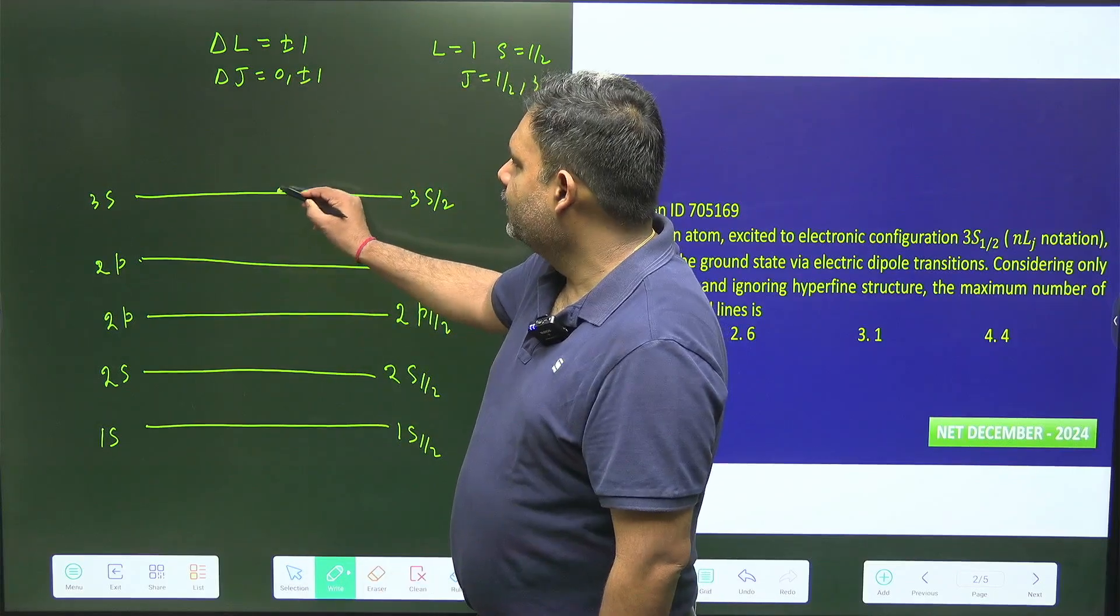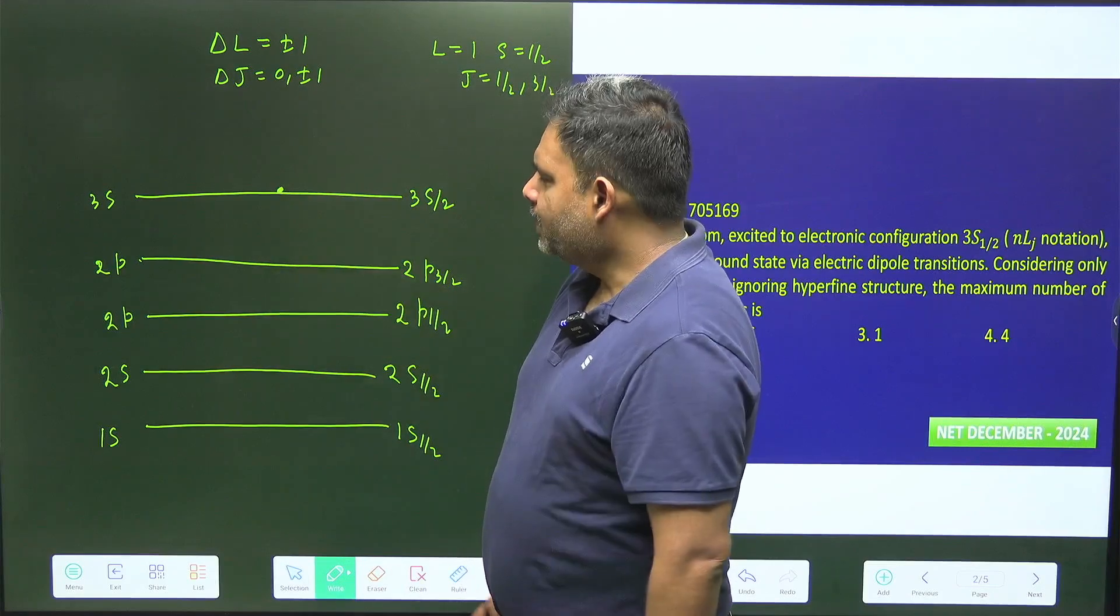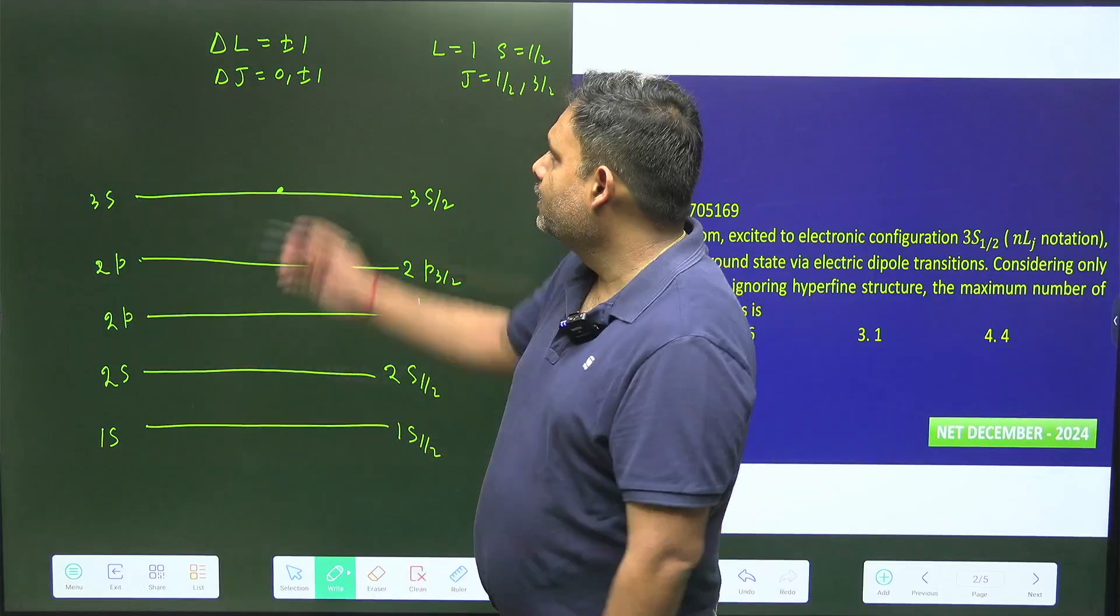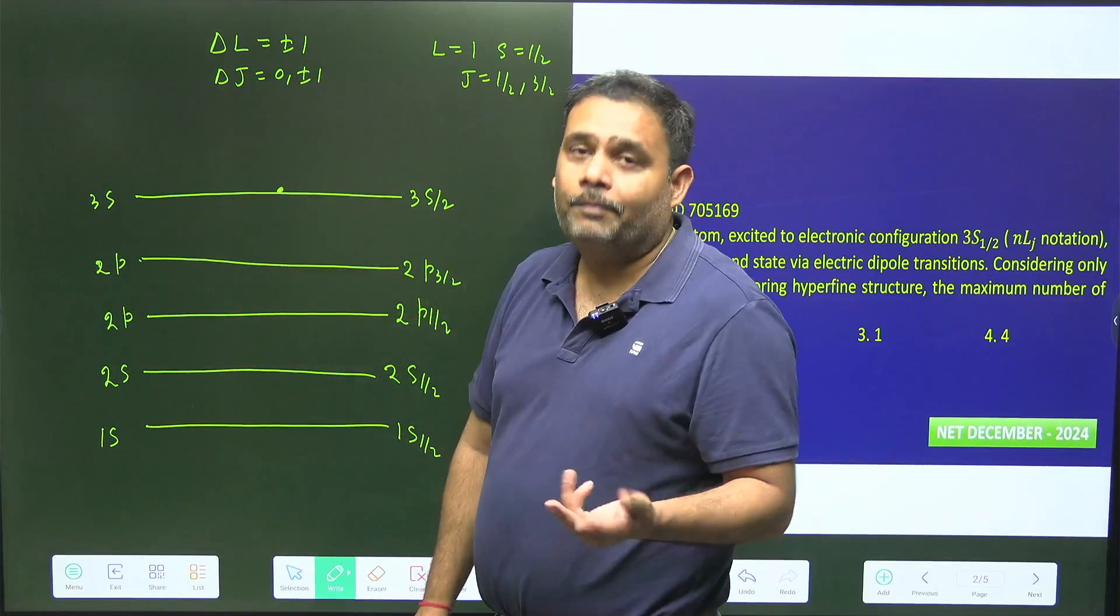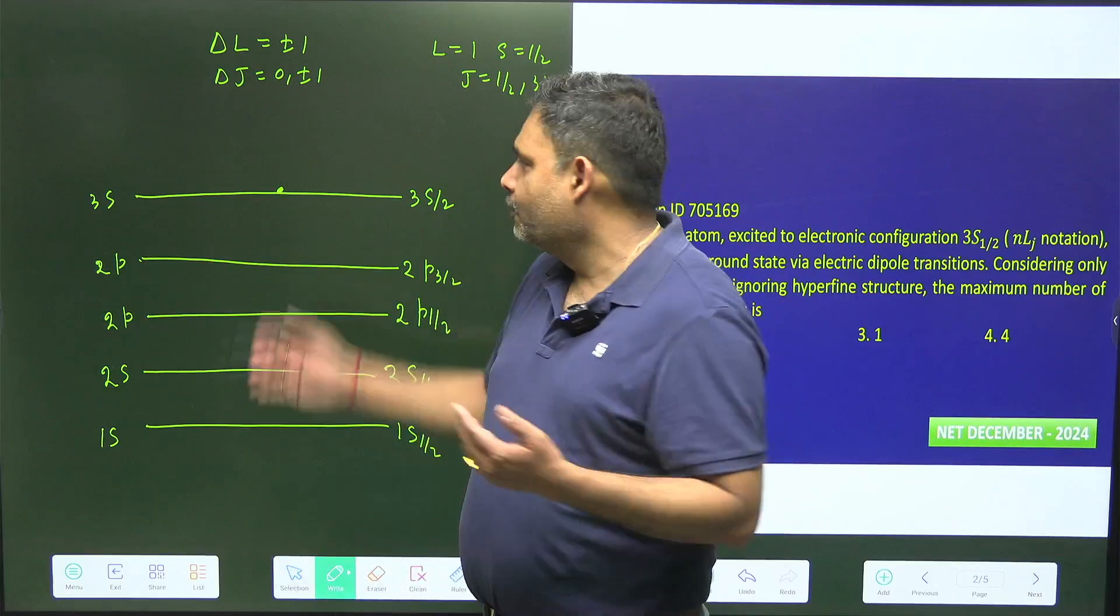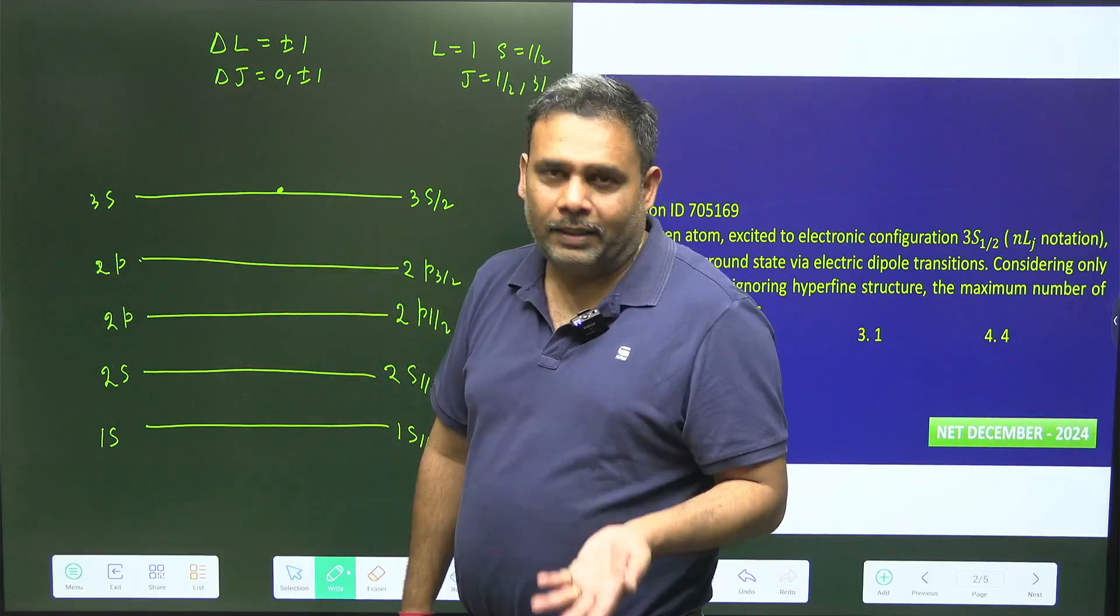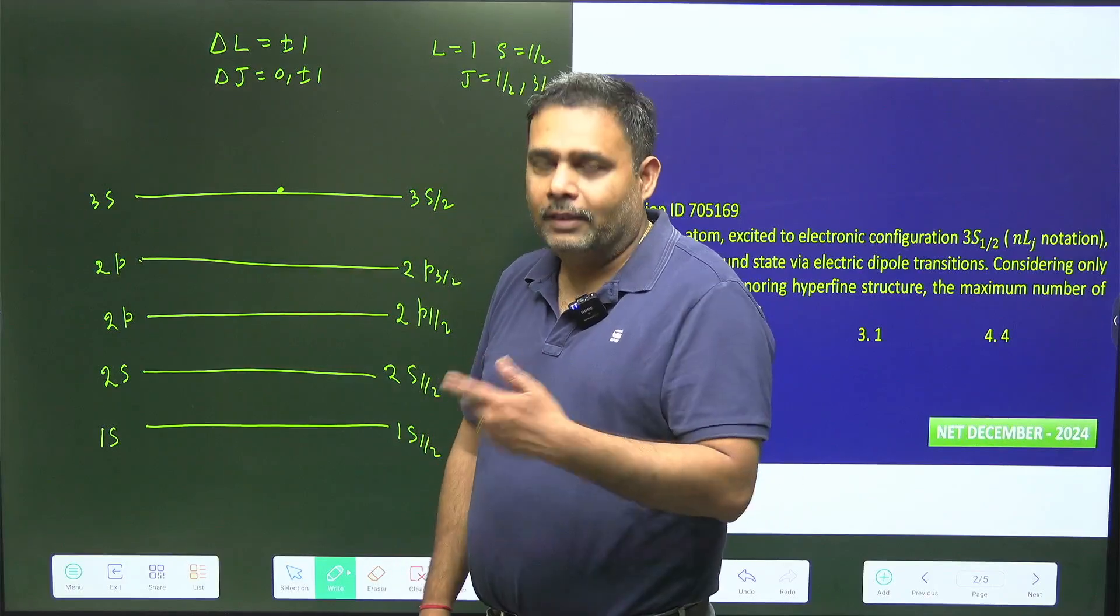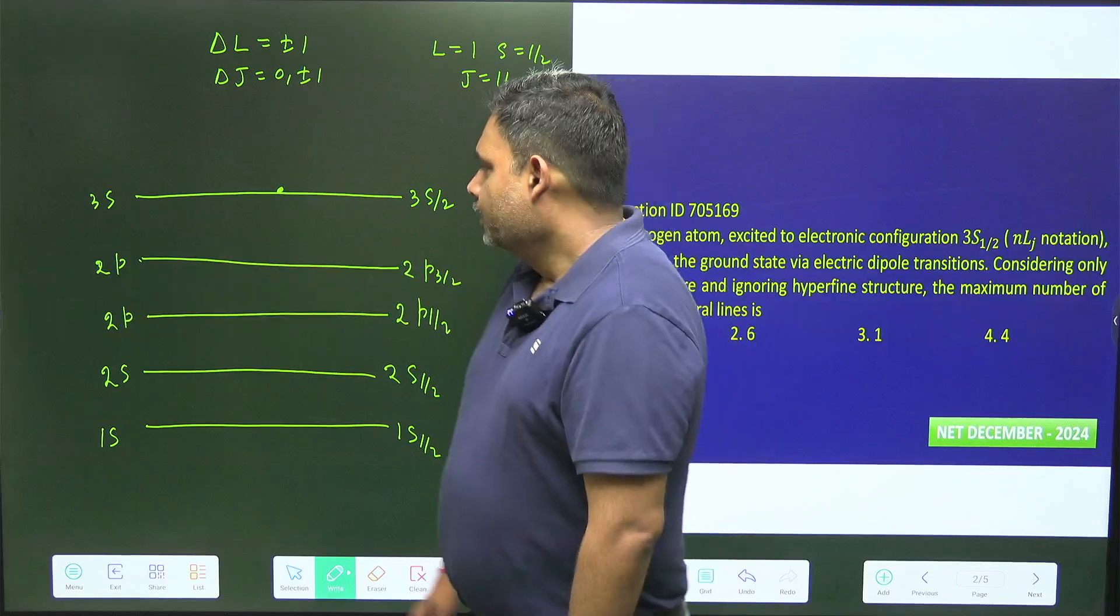So initially my atom is in this state. So obviously it cannot directly go to the s state because delta l must be plus minus 1. So from s it will go to the p orbital only. Because plus minus 1 is there, it will not go to d orbital also.